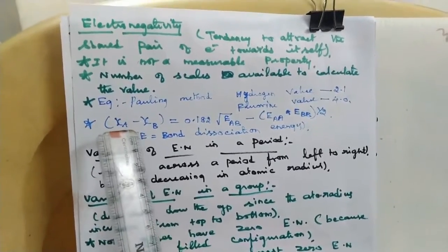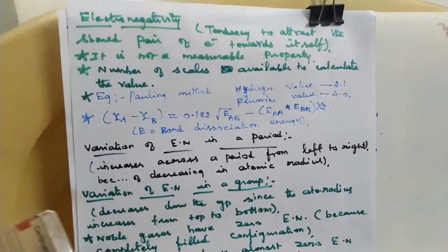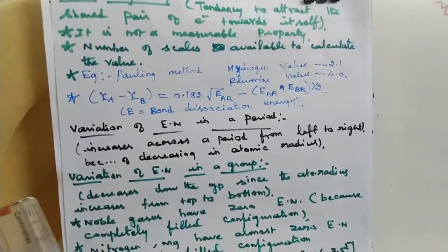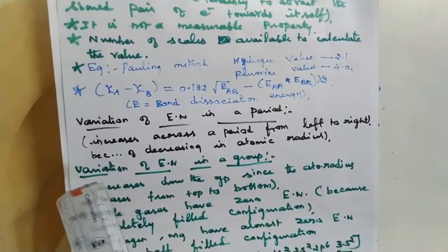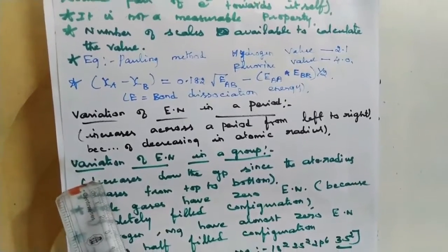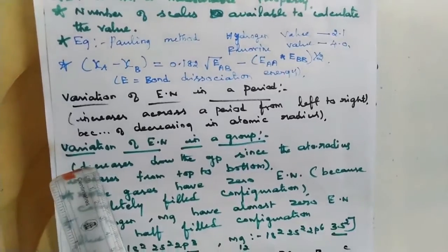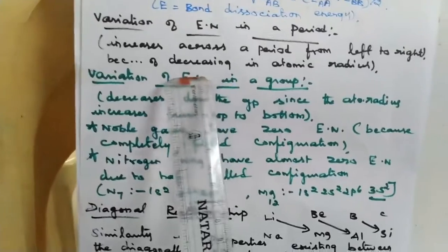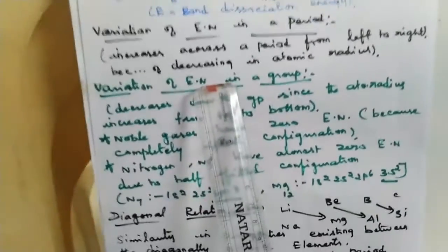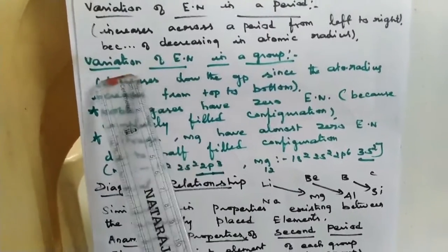Electronegativity varies both across a period and down a group. Across a period, moving from left to right, electronegativity increases. This is due to a decrease in atomic radius and an increase in nuclear charge as we move from lithium to neon in the second period.